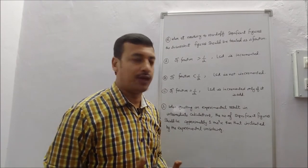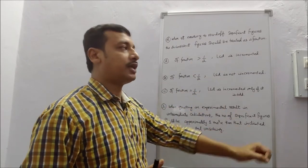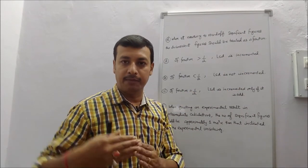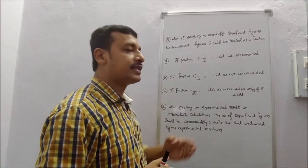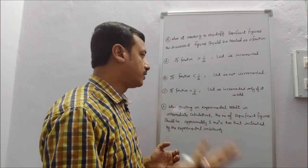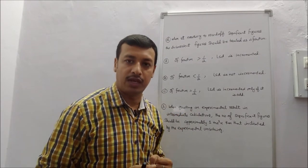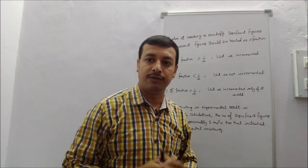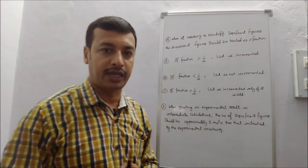There are 3 ways to handle this fraction. If the fraction is greater than half, then we increment the LSD — we increase the LSD value. If the fraction is less than half, then the LSD is not incremented. If the fraction is equal to half, then the LSD is incremented only if it is odd; if it is an even number, we do not increment it.